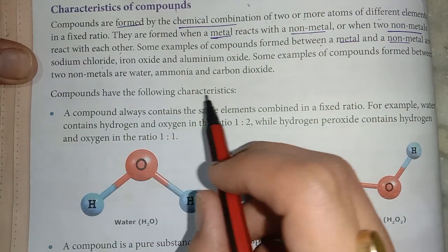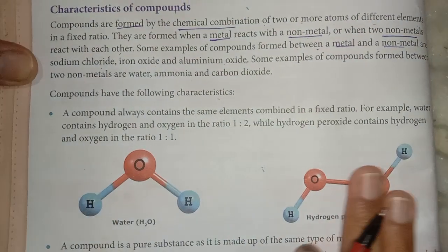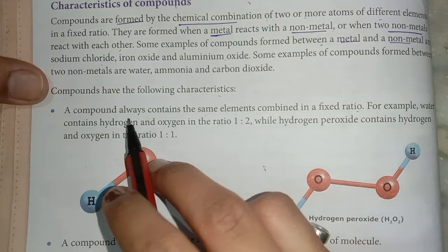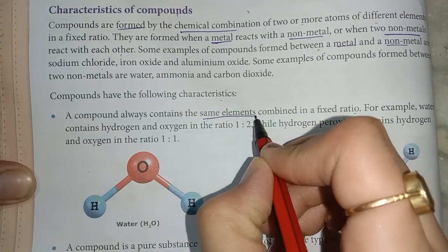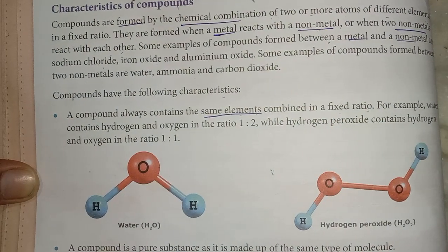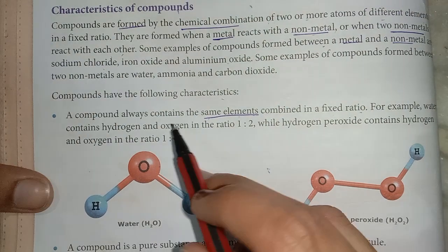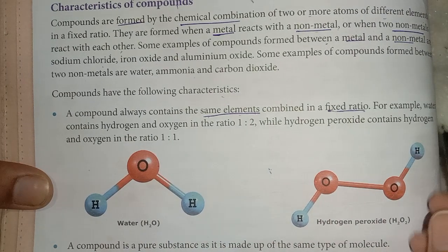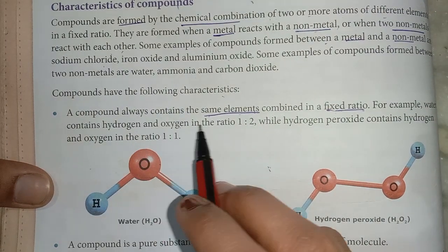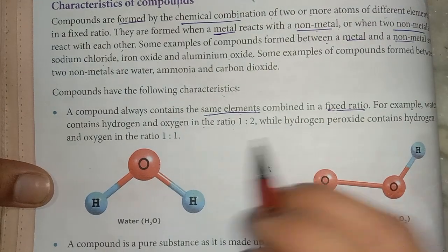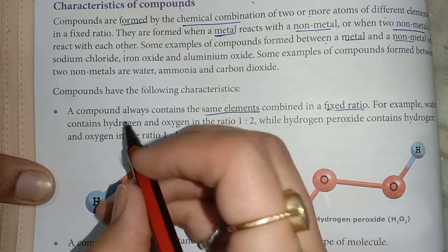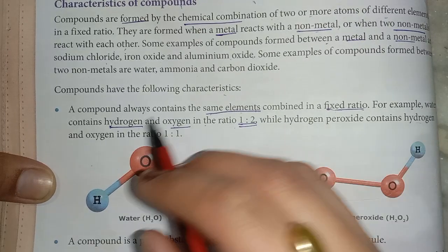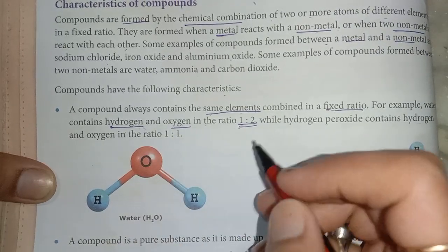Compounds have the following characteristics. A compound always contains the same elements combined in a fixed ratio. For example, water contains hydrogen and oxygen in the ratio 1:2. The chemical formula of water combines hydrogen and oxygen in the fixed ratio 1:2, meaning hydrogen is 1 part and oxygen is 2 parts.